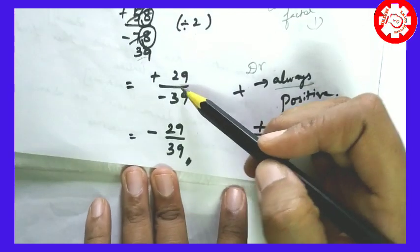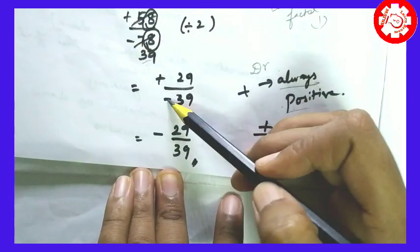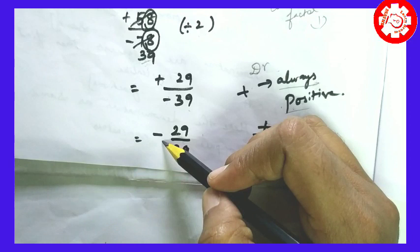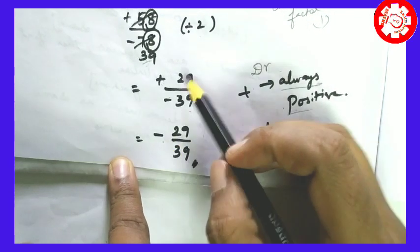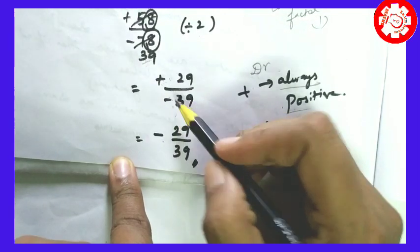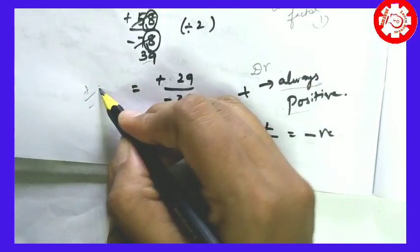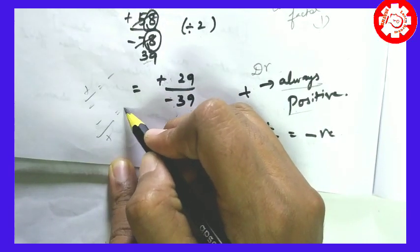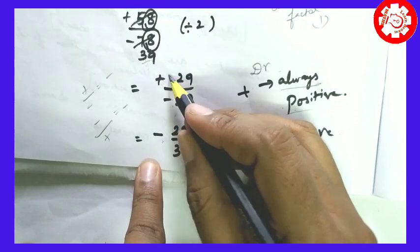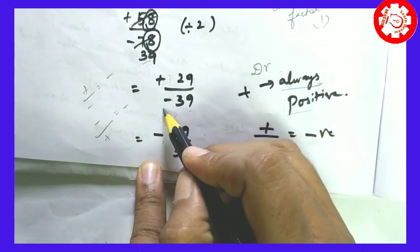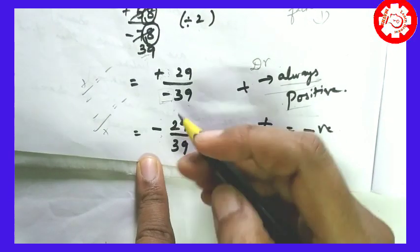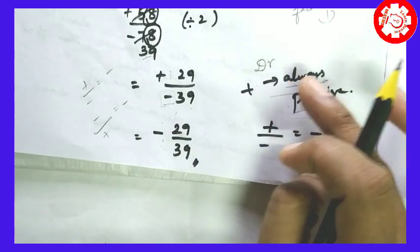Now 29 by 39: plus by minus is minus — that is the division rule for integers. The rules: positive by negative is negative, negative by positive is negative, negative by negative is positive. So plus by minus gives minus. If we have a type minus kong to minus in the denominator, the denominator must be made positive.